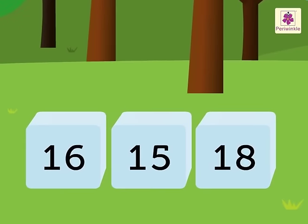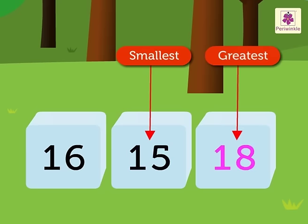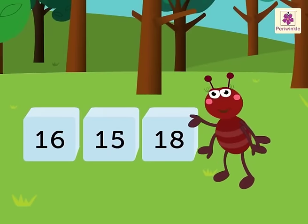Let's arrange 16, 15, and 18 in ascending order. Here, the smallest is 15 and the greatest is 18. Hence, the ascending order is 15, 16, 18.